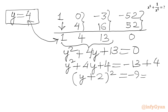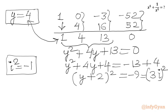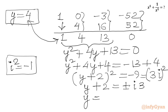In the RHS this gives minus 9, which we can write as 3i whole square, since i squared is negative 1 — using the property of complex numbers. Taking the square root of both sides, we get y plus 2 equal to plus or minus 3i. So y equals minus 2 plus or minus 3i; both roots are complex.